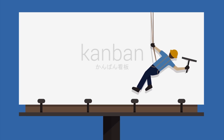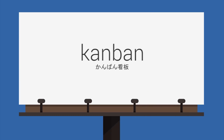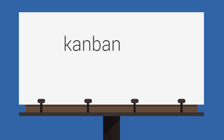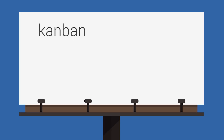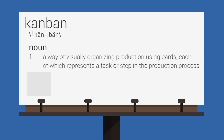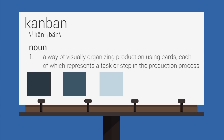Kanban is a Japanese word that literally means card or billboard. In the terms of project management, Kanban is a way of visually organizing production using cards, each of which represents a task or step in the production process.